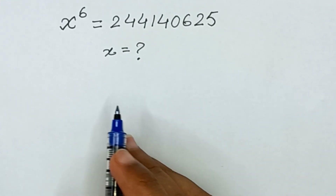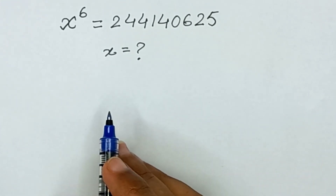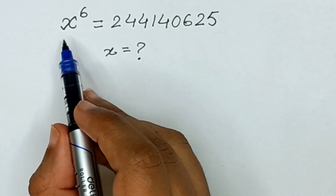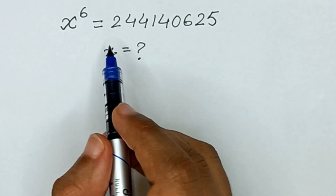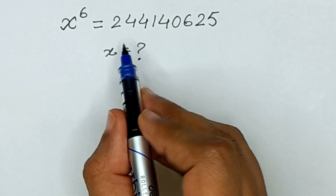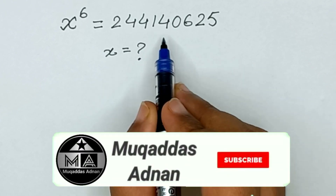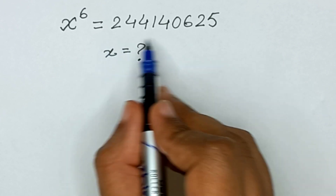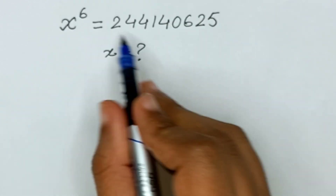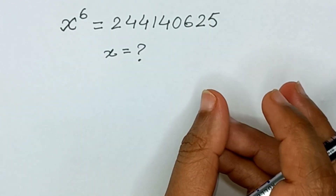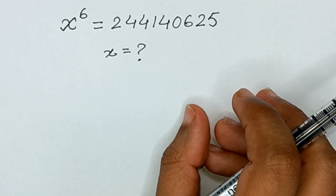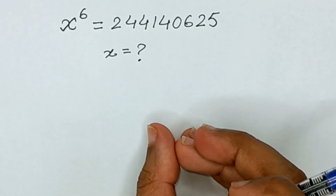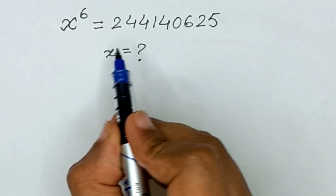Assalamu alaikum friends, welcome back to my channel. Hope you are all fine. Today we will find the value of x from this equation: x raised to the power 6 is equal to 244,140,625. It's a bigger number — a nine-digit number — so how can we find x? x is an integer.